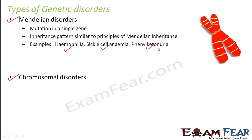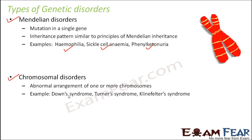We will talk about each of these disorders and see what causes them and how we can get to know about them through a pedigree chart. The second type of disorder is chromosomal disorder, which happens due to abnormal arrangement of one or both chromosomes — either the number of chromosomes becomes abnormal, becoming less or more than expected, or the structure of the chromosome changes. Some examples are Down syndrome, Turner syndrome, and Klinefelter syndrome. All of these syndromes have been named after the person who described them for the first time.